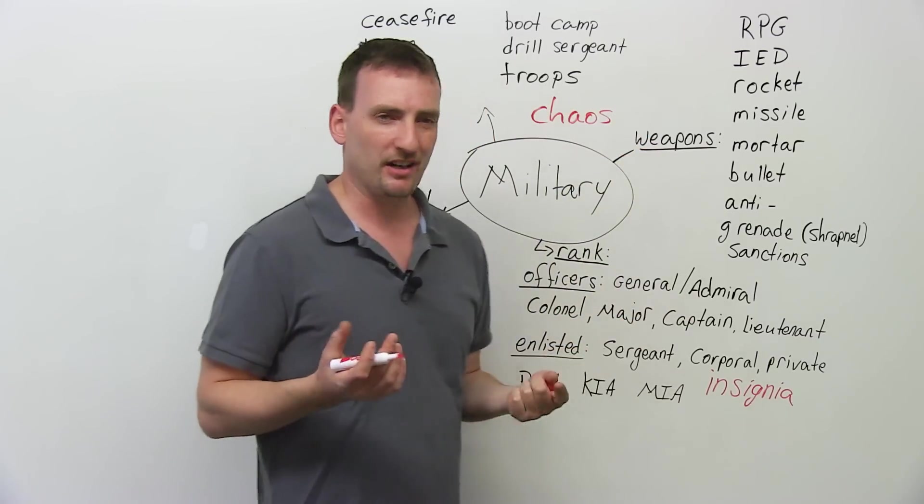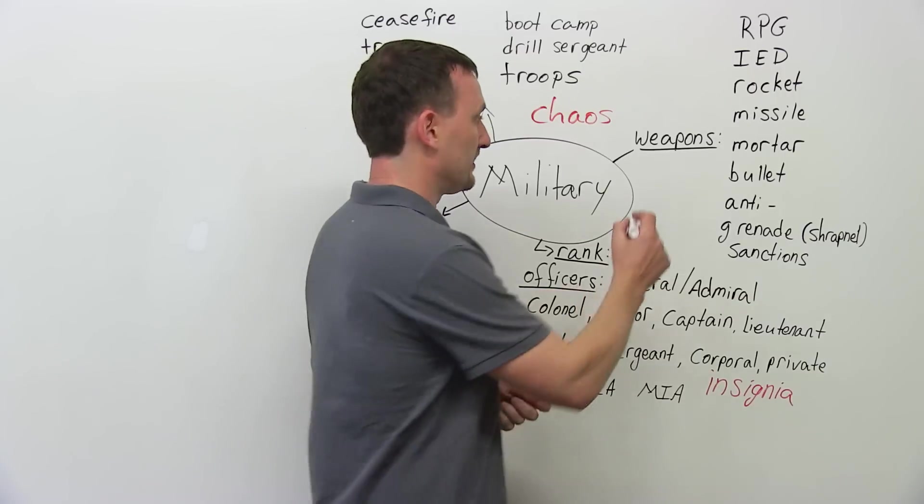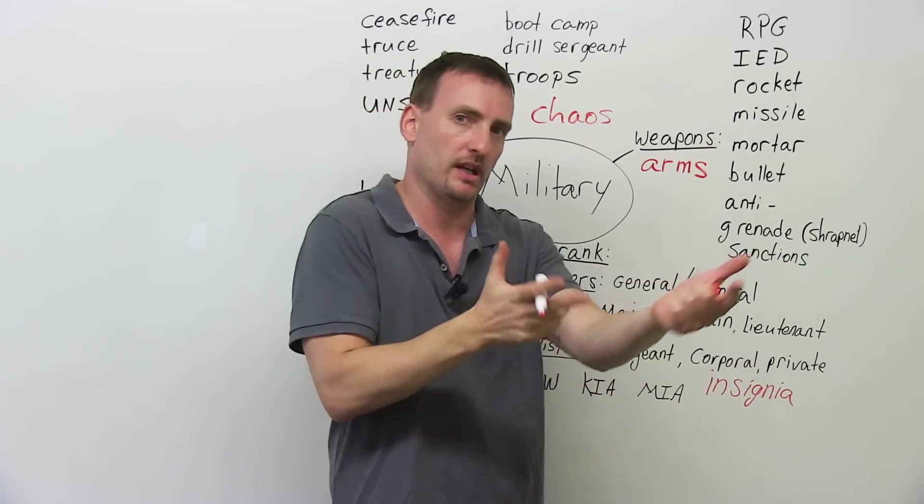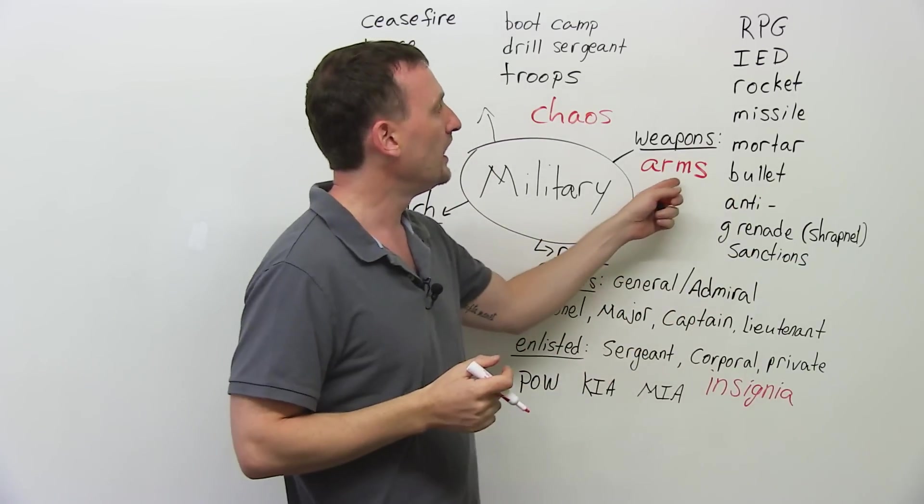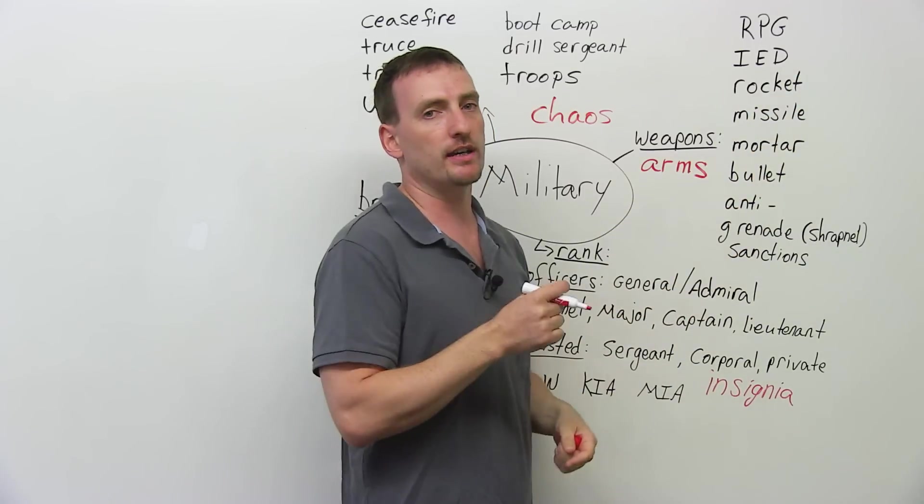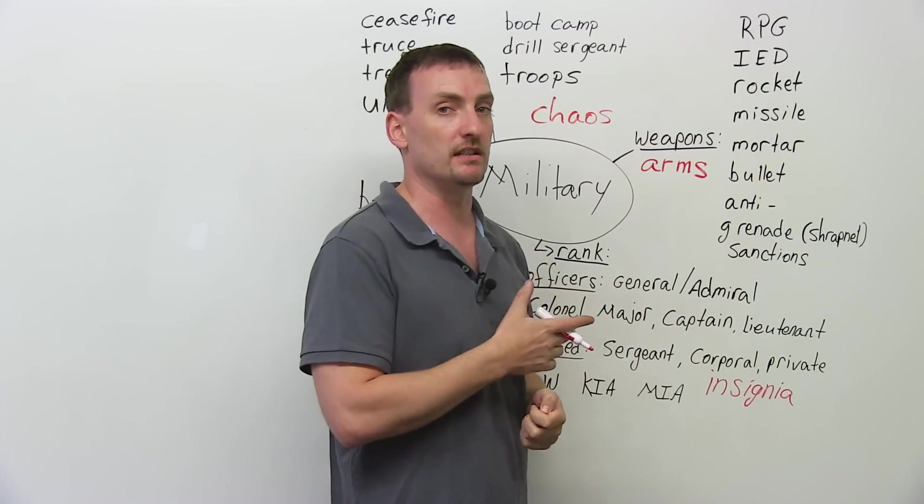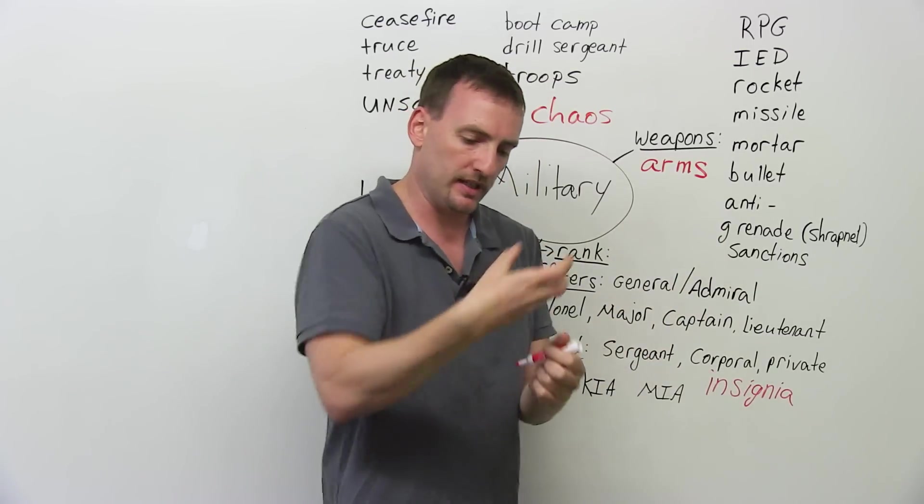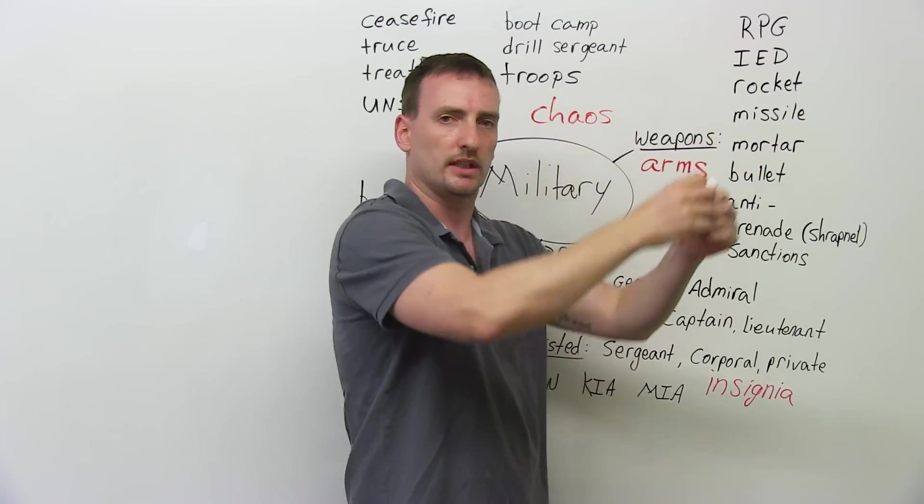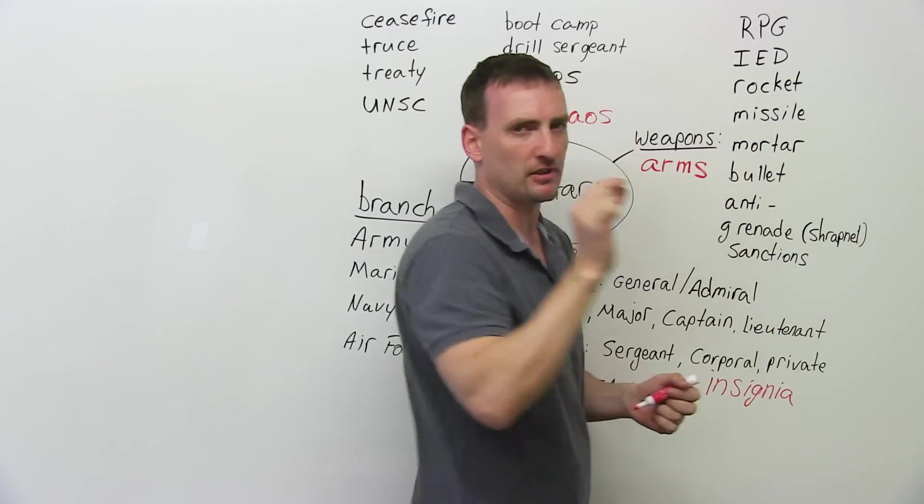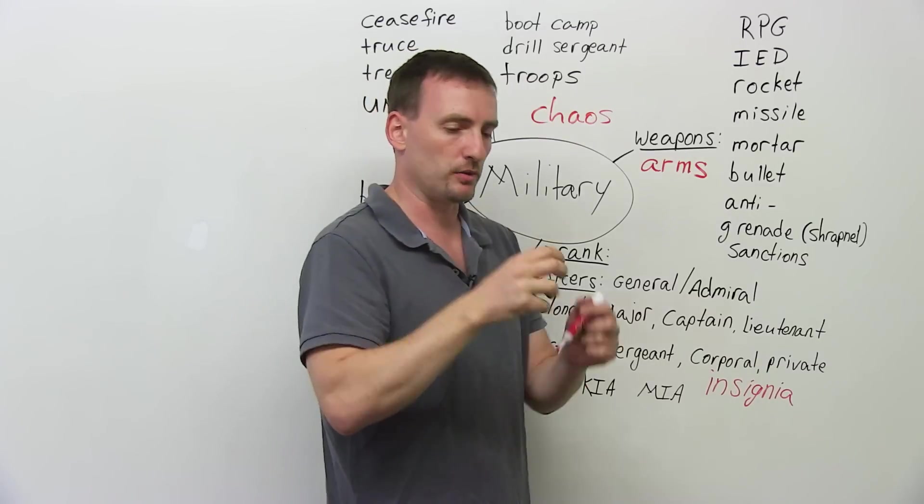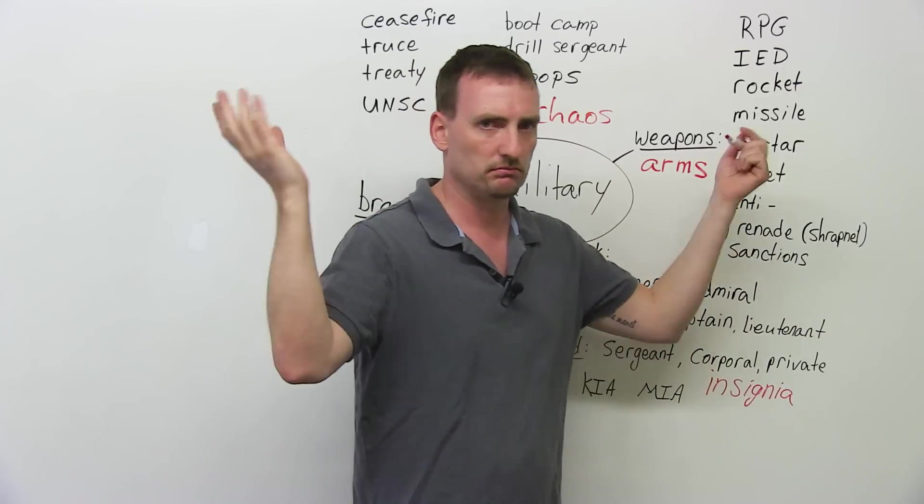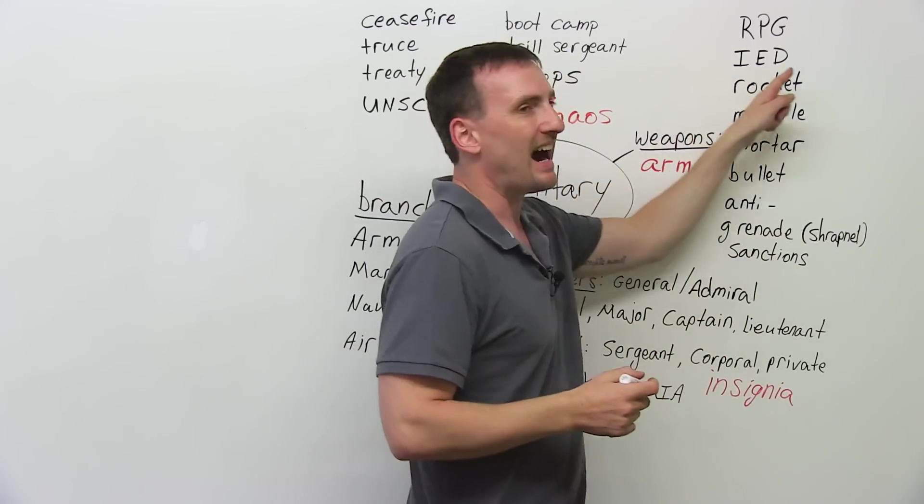When we talk about war, when we talk about armies, we have to talk about weapons, also called arms. Like arms, except that it's an extension of your arm. The gun is an extension of your arm. So RPG. Rocket-propelled grenade. So a grenade, as we have here, is like a mini-bomb. You put it into the gun, you shoot it, it goes, explodes, and you have shrapnel. Shrapnel are little pieces of metal. So when the grenade explodes, all the little pieces of metal go flying everywhere and kill and destroy.